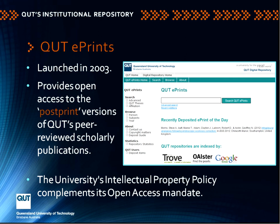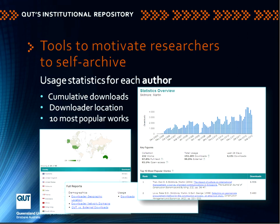The QUT ePrints service was launched in 2003, taking material from 2004 onwards. We found very rapidly that our scholars, given a choice between post-print and pre-print additions to the repository, would choose the post-print. What's really important is the way the University's intellectual property policy complements the open access mandate. Quite early on, the library started providing immediate feedback to users about the way their material was being downloaded, and over time these statistical dashboards have become more informative.